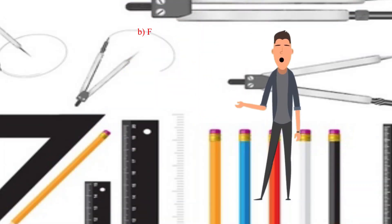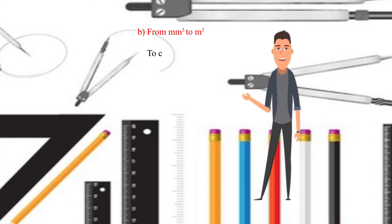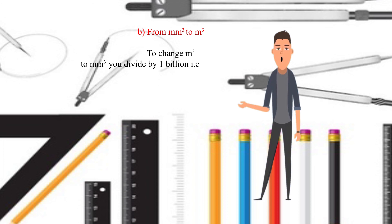B: From cubic millimeters to cubic meters. To change cubic millimeters to cubic meters, you divide by 1 billion, i.e., multiply by 1 divided by 1 billion.